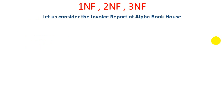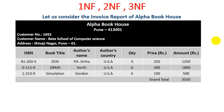Before we discuss any normal form, we need to know the basic terminology about normalization. Let's consider the invoice report of Alpha Book House. In this particular invoice there is information about the book house address, pin code number, customer number, customer name and address. There are also ISBN number, book title, author name, author country, quantity, price, amount, and a total. This is the actual invoice report of Alpha Book Store. Through this example we will discuss all three normal forms — first NF, second NF, and third NF — with the help of basic terminology.